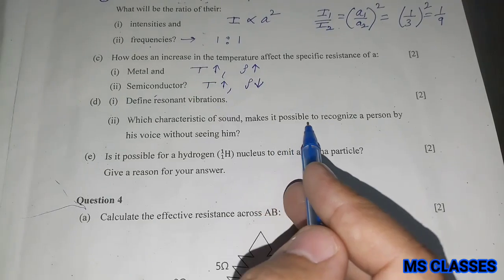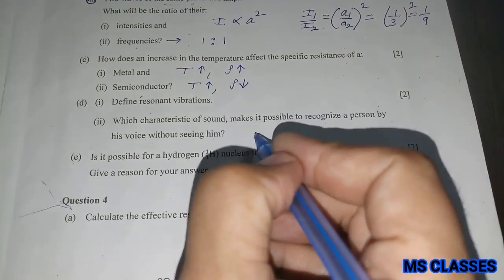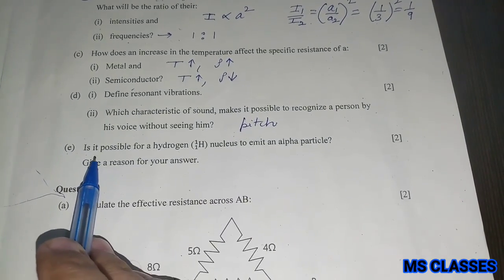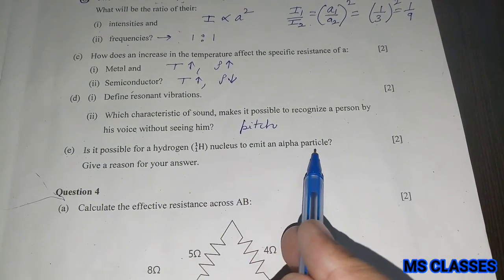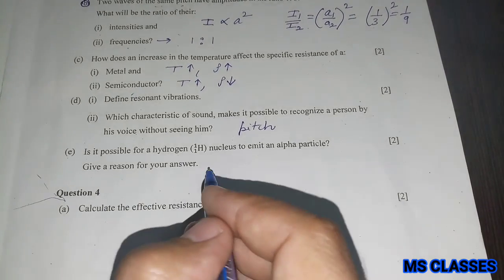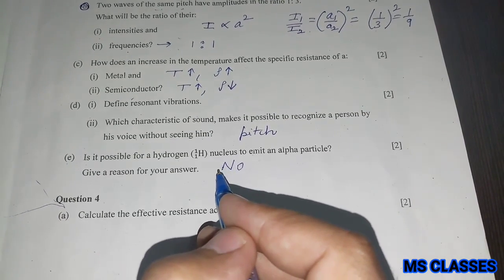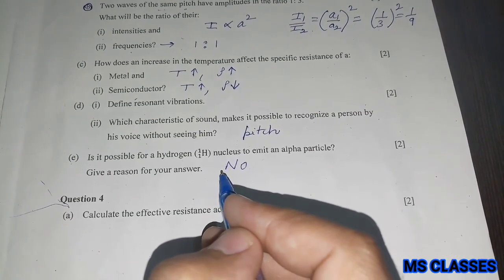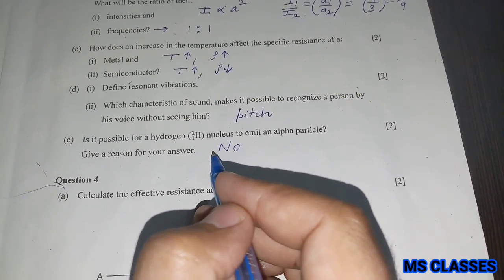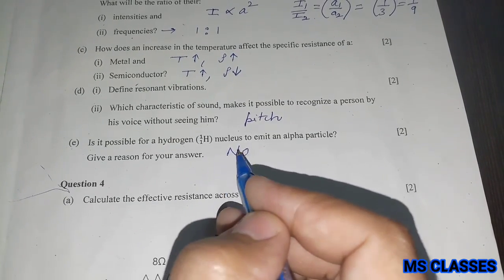Which characteristic of sound makes it possible to recognize a person by his voice without seeing him? That is pitch. Is it possible for a hydrogen nucleus to emit an alpha particle? Give a reason for your answer. It is not possible since a hydrogen nucleus is only a single proton and alpha particle is a helium nucleus containing two protons and two neutrons. A hydrogen nucleus just does not have enough particles to give off alpha particles.